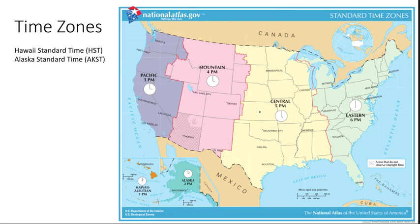On this map, if eastern time is 6 p.m., then central is one hour less at 5 p.m., mountain is one hour less at 4 p.m., and Pacific is 3 p.m. Alaska is one hour different from Pacific, so that's 2 p.m. Hawaii is even further west — one hour different from Alaska — which is 1 p.m.